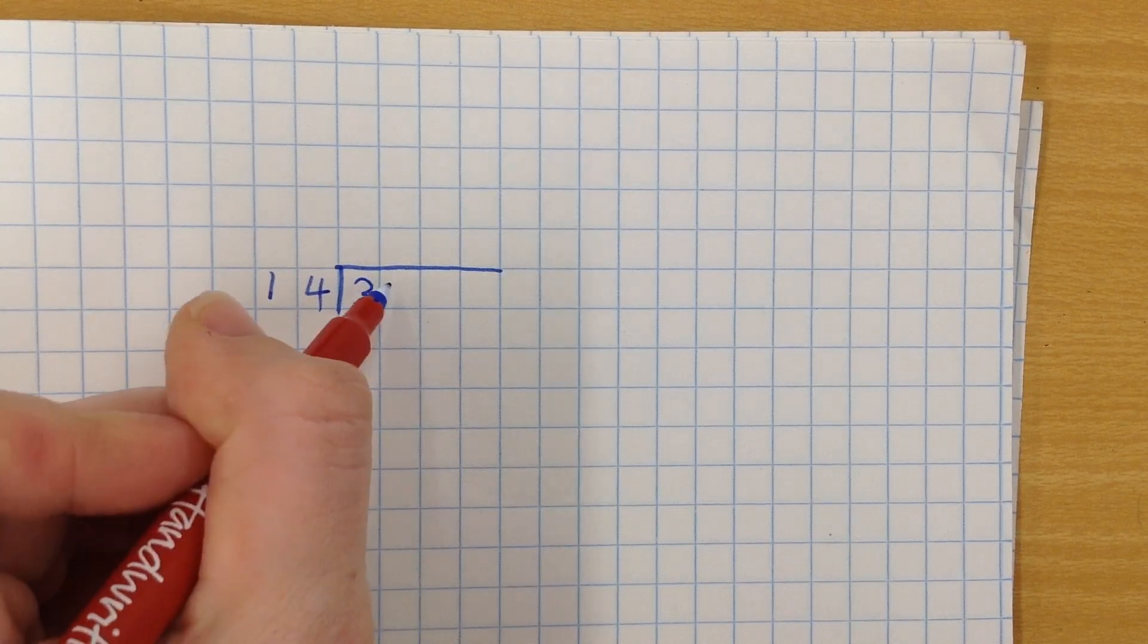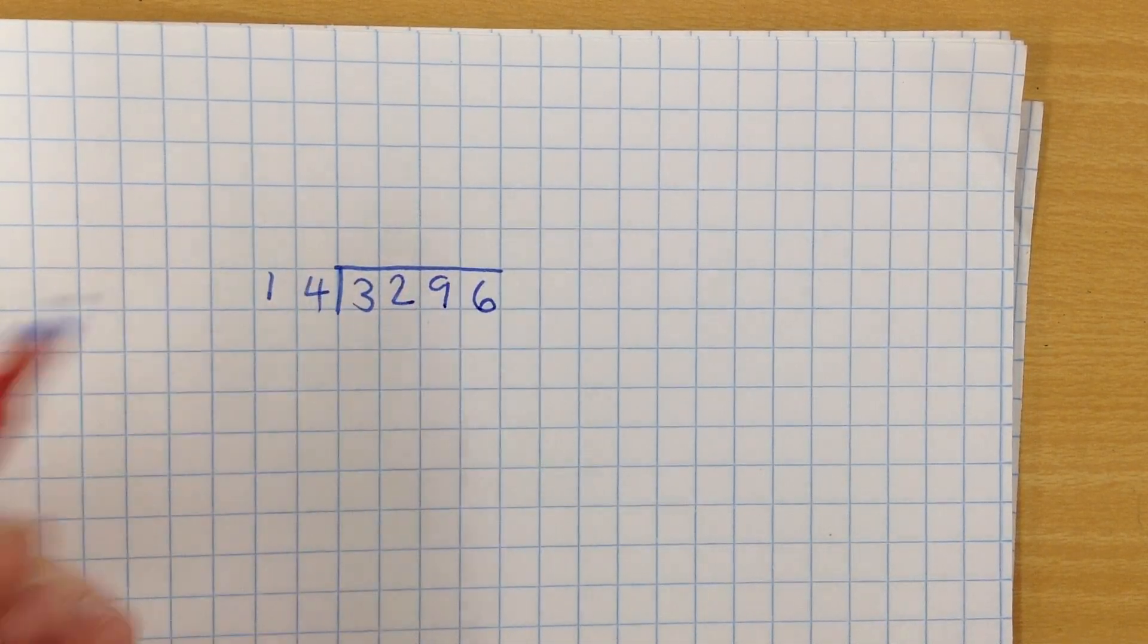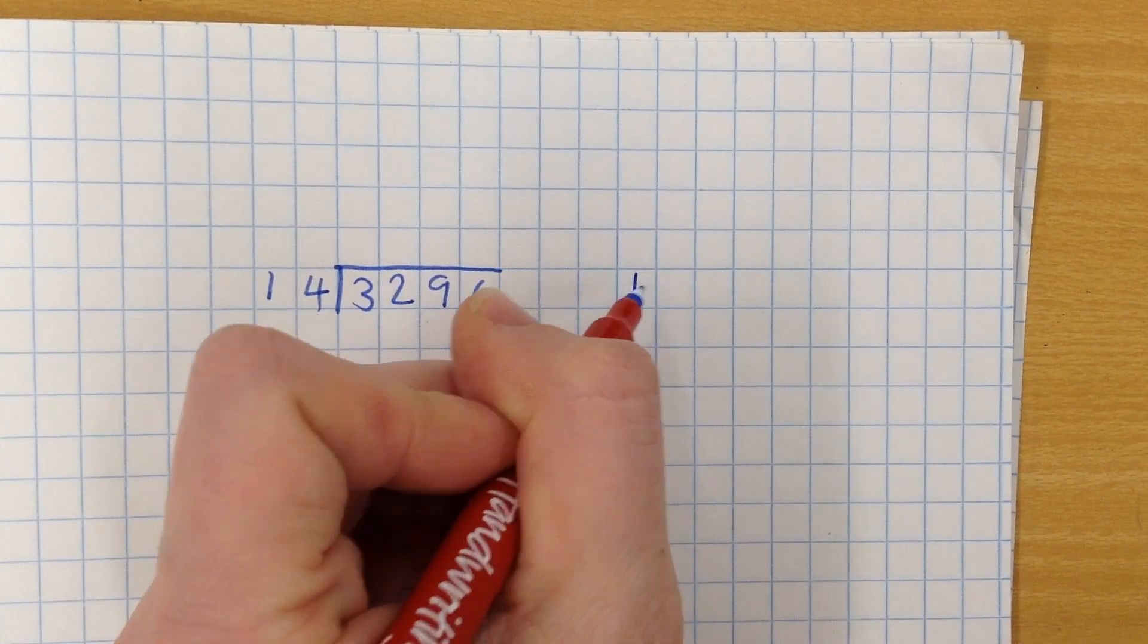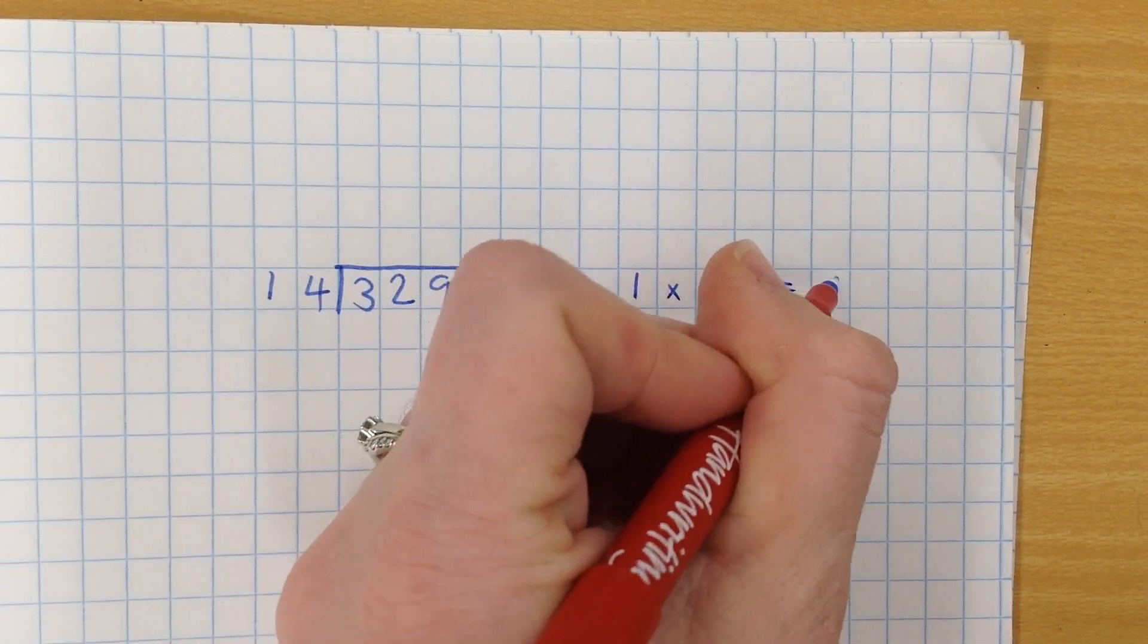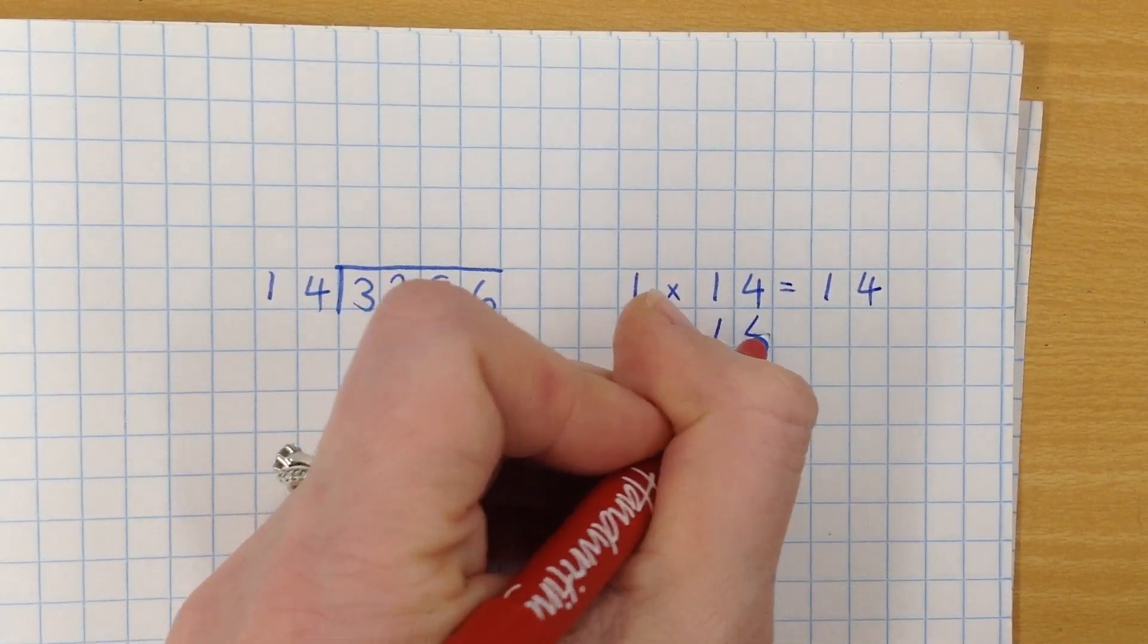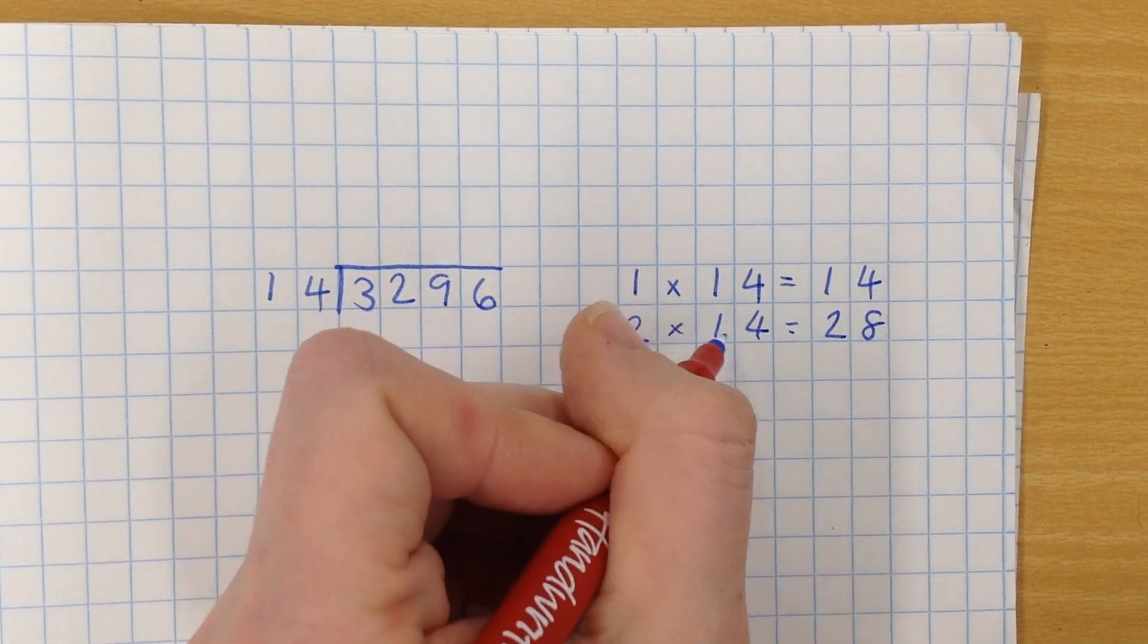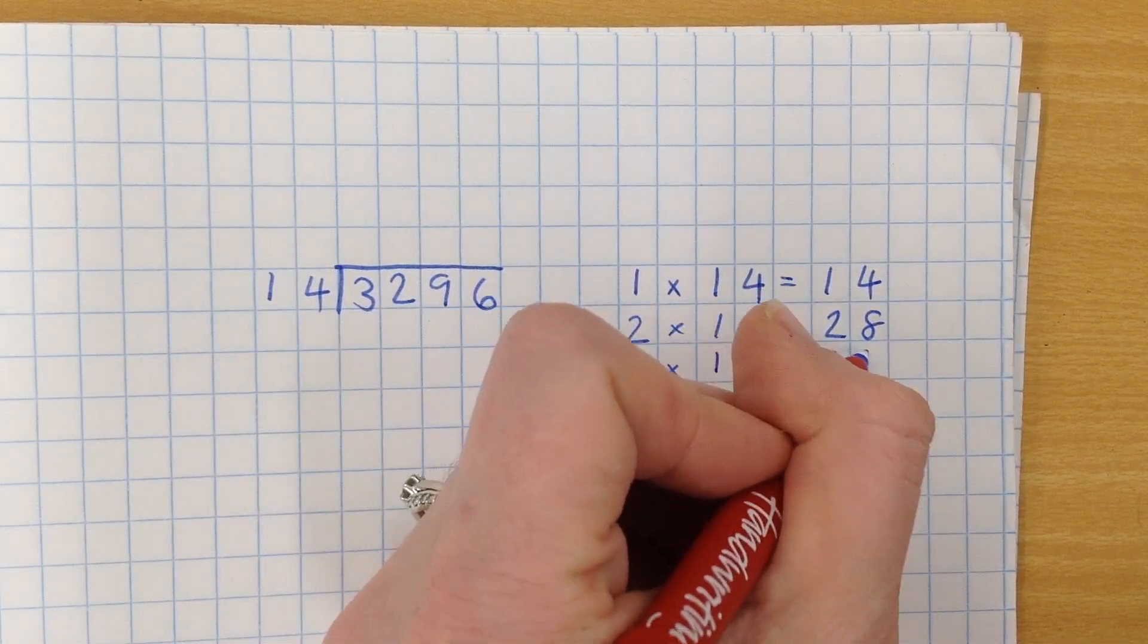So I'm just going to do how many times 14 goes into 3296. The first thing I need to do is make myself what we tend to call a little box of magic, which is a little area that I can do some workings out, just so that I can keep track of multiplications and useful multiplications that I can use a little bit later on.